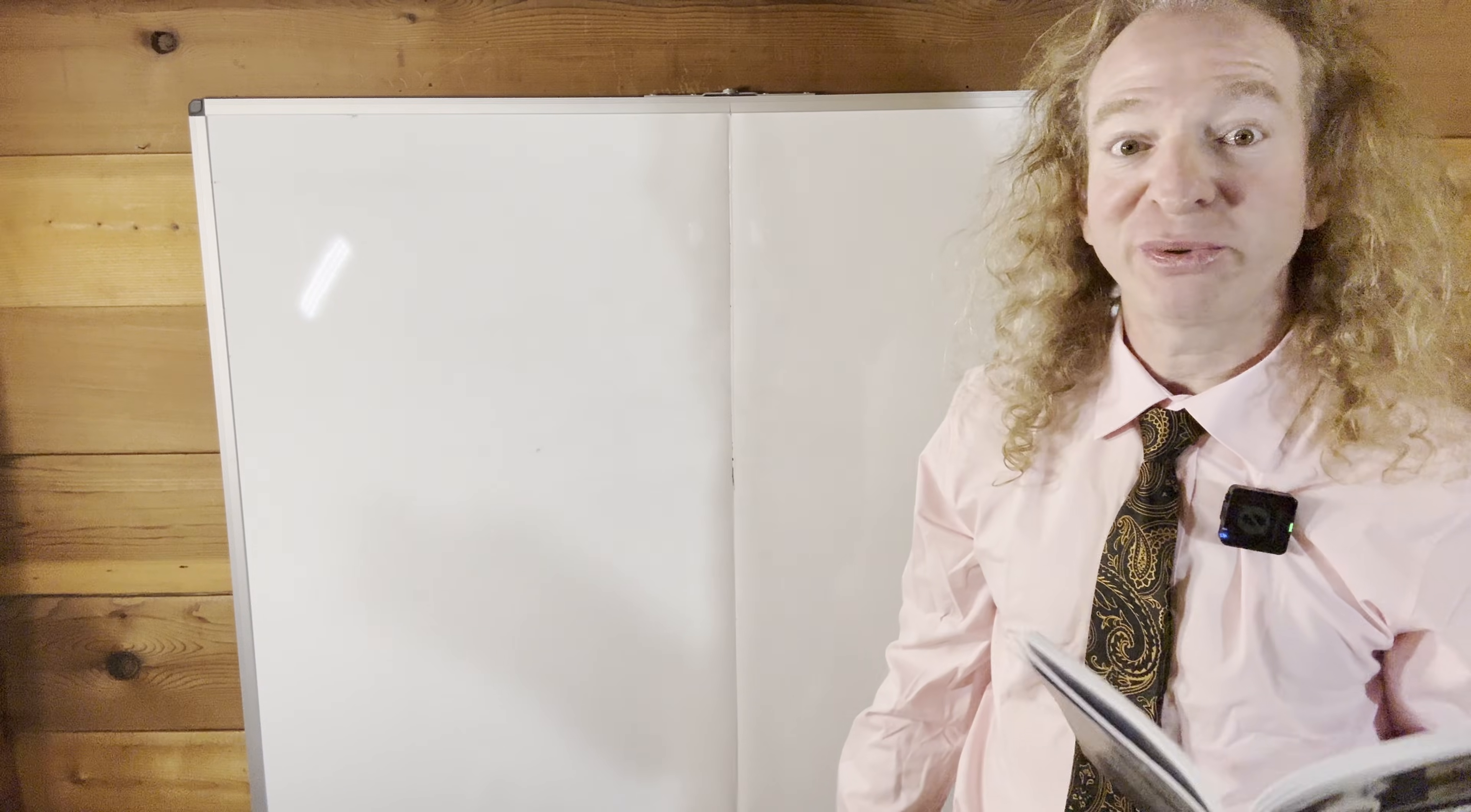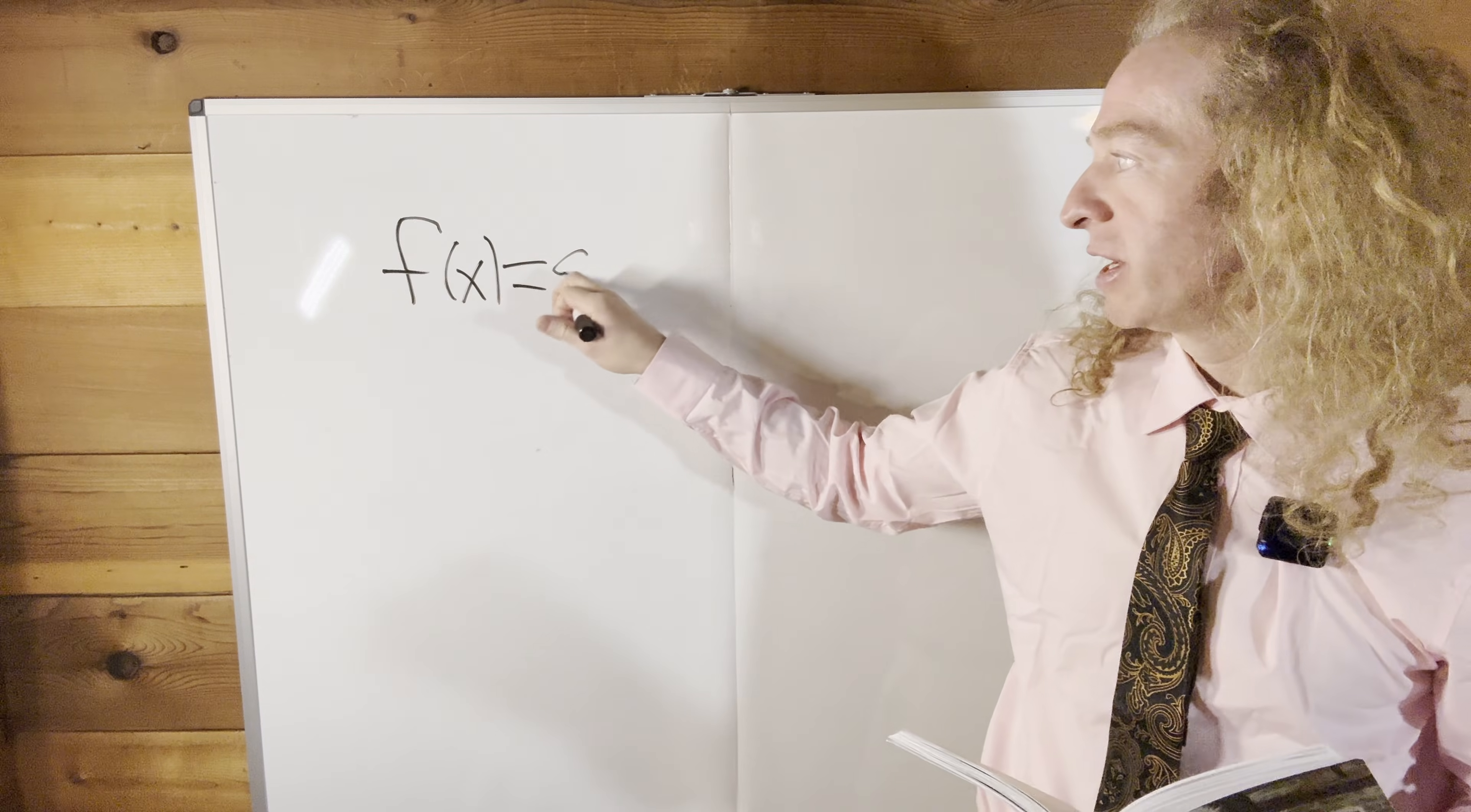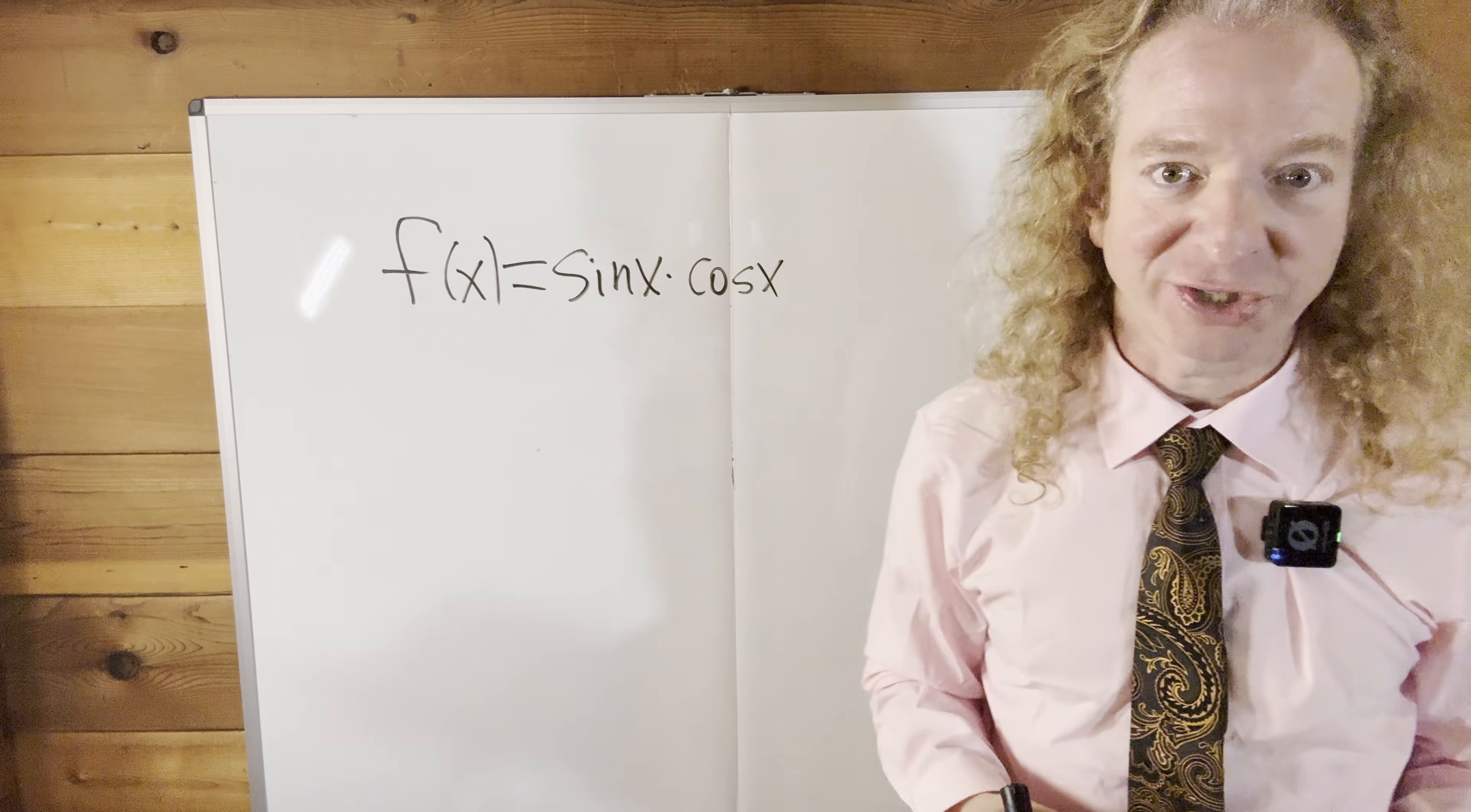Hi, in this video we're going to do a simple example of the product rule. So the question is to find the derivative. We have f of x equals sine x times cosine x, and the question is to find the derivative of this function.